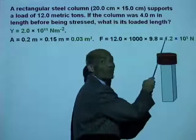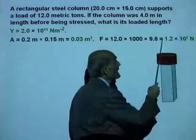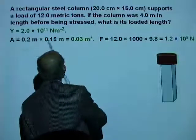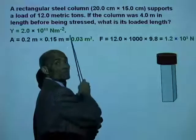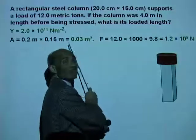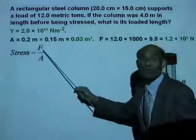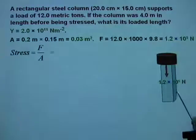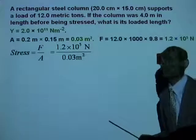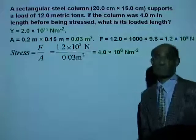The total force acting on the column is 1.2 times 10 to the power of 5 newtons, and the area on which this force is acting is 0.03 square meters. Therefore, the stress is 4 times 10 to the 6 newtons per meter squared.